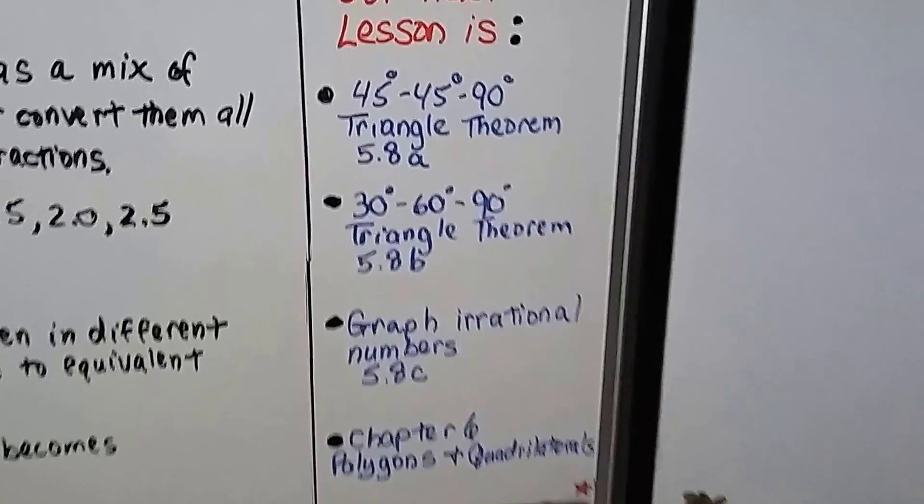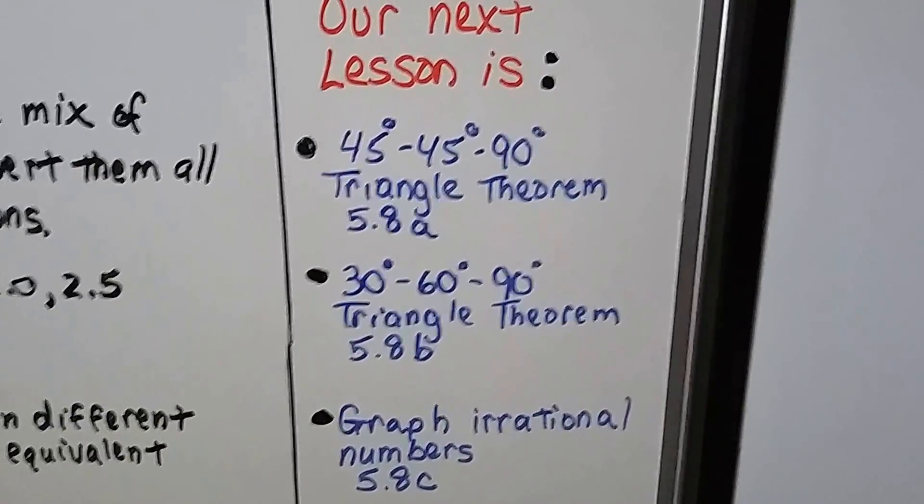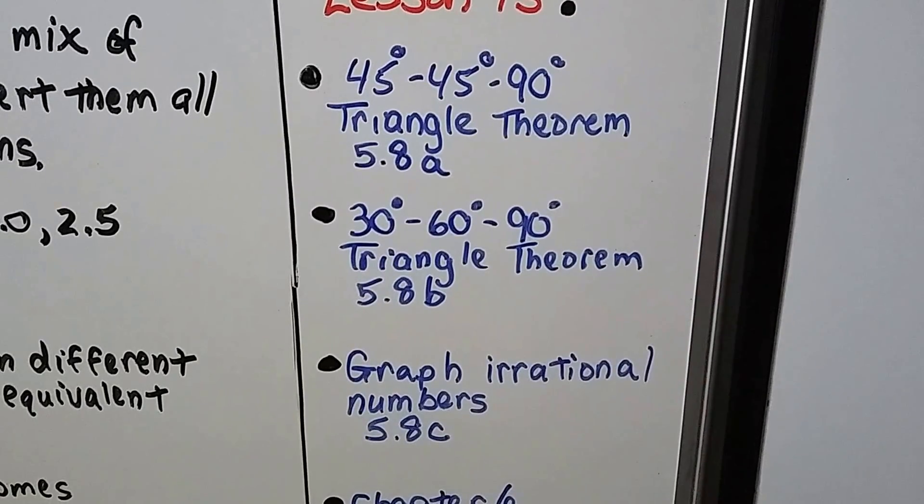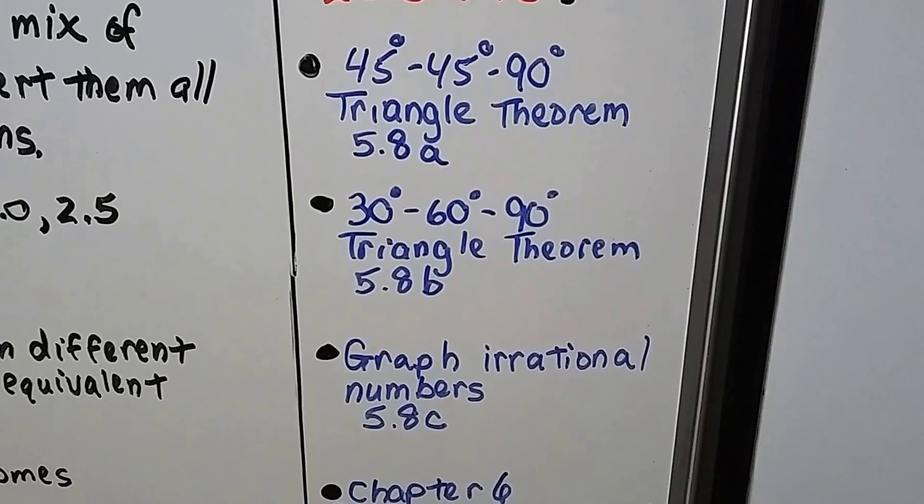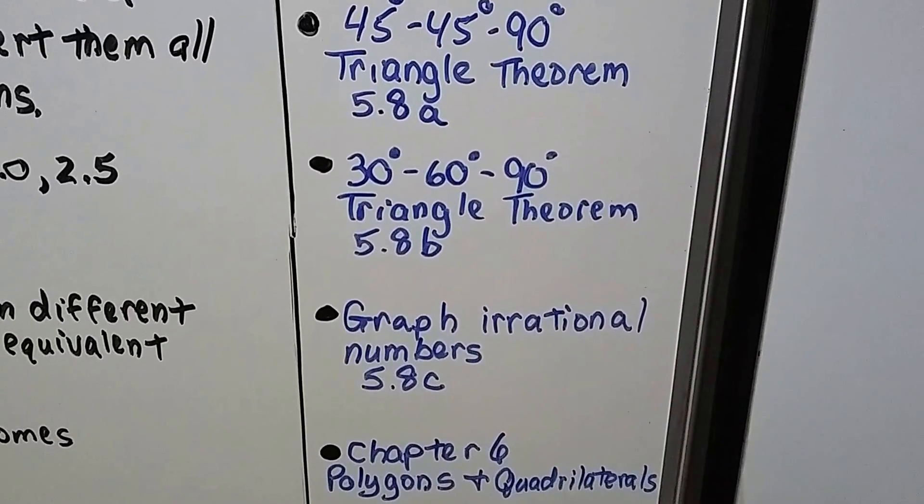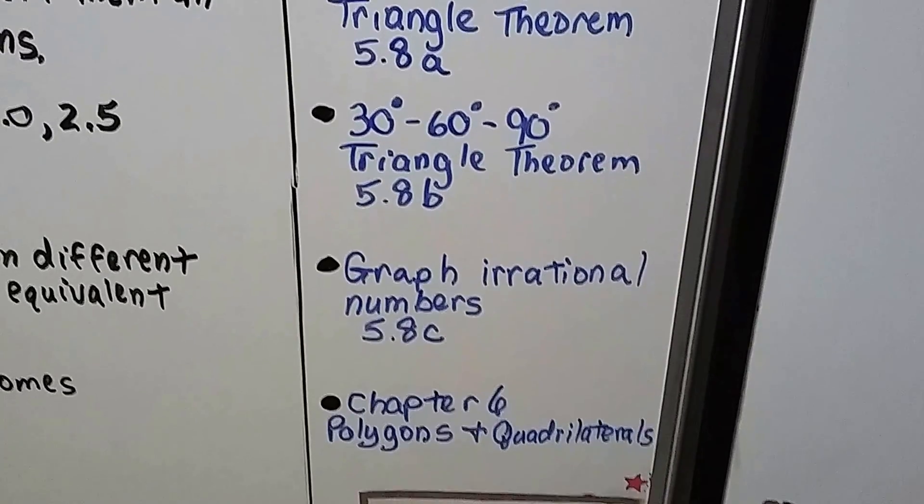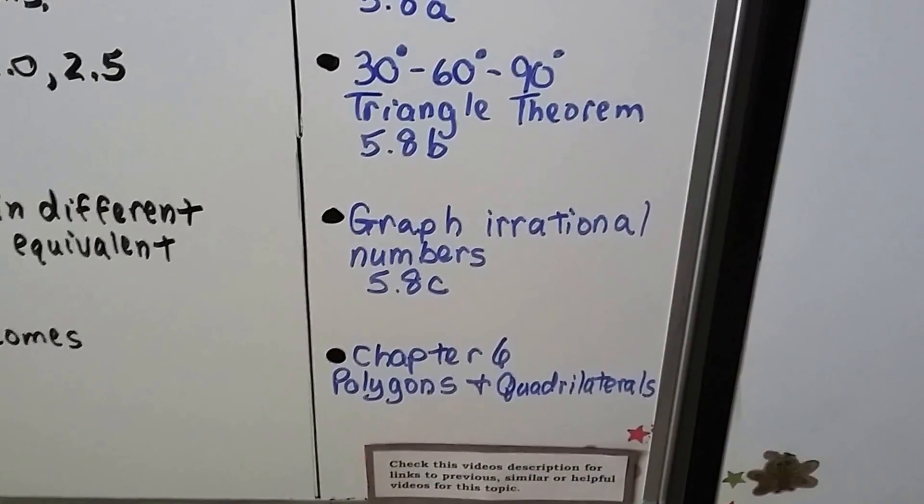Our next lesson is the 45-45-90 triangle theorem. After that, we'll do the 30-60-90 triangle theorem. Finally, for 5.8c, we're going to graph irrational numbers. Then we'll move on to chapter 6.